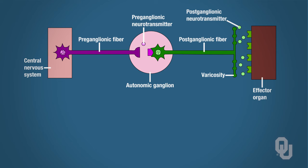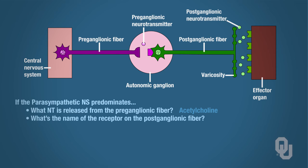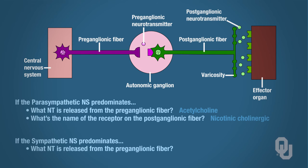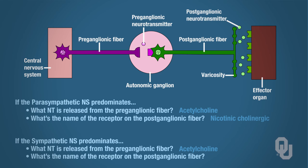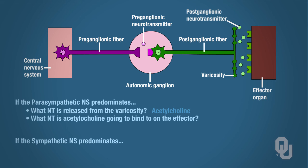Does this diagram look somewhat familiar? We did this for smooth muscle, and now we are going to do the same for cardiac muscle. So if the parasympathetic nervous system predominates, what neurotransmitter is released from the preganglionic fiber? Acetylcholine. What's the name of the receptor on the postganglionic fiber? Nicotinic cholinergic. When the parasympathetic nervous system predominates, what neurotransmitter is released from the varicosity? Acetylcholine. What receptor is acetylcholine going to bind to on the effector? Muscarinic cholinergic. And what is the effector in this situation? Cardiac muscle.